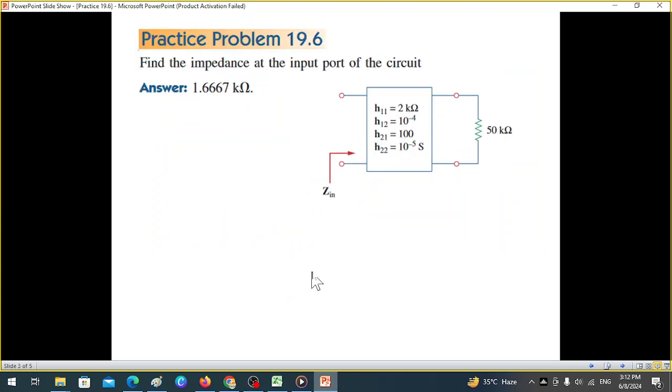Now let's come to the question. The practice problem says find the impedance at the input port of the circuit. So this is the circuit given. You can see there is a resistance connected at the output, 50 kilo ohm resistance. These are the parameters given and the answer is also given.